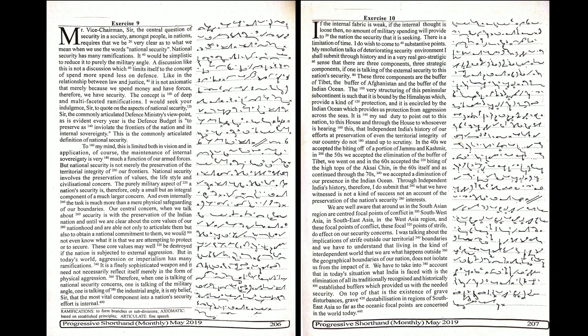That independent India's history of our efforts at preservation of even the territorial integrity of our country do not stand up to scrutiny. In the 40s, we accepted the biting of a portion of Jammu and Kashmir. In the 50s, we accepted the elimination of the buffer of Tibet. We went on, and in the 60s, we accepted the biting of the high tops of the Aksai Chin. In the 60s itself, and as continued through the 70s, we accepted a diminution of our presence in the Indian Ocean. Through independent India's history, therefore, I do submit that what we have witnessed is not a kind of success, not an account of the preservation of the nation's security interests.